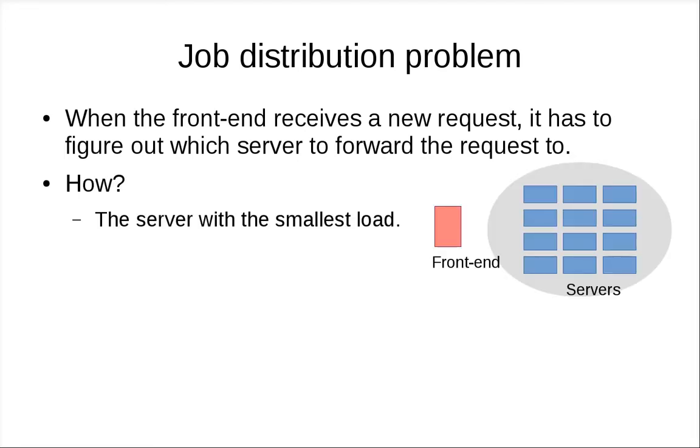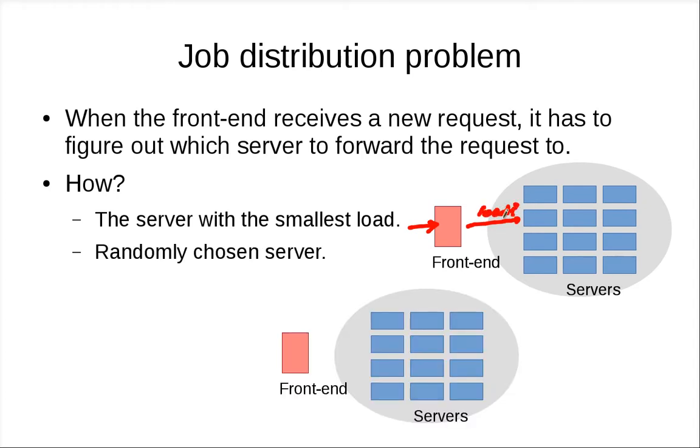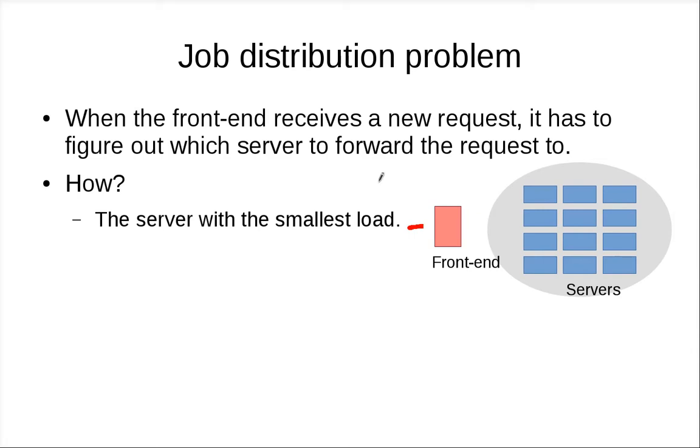There are many ways to do that. One is that the front end figures out the server with the smallest load. In order to do that, when some job comes in, the front end has to somehow know the status of all the servers. Maybe it has to ask the server, what is your load? And then use that information to forward the job to the smallest guy. If this guy says, yeah, I have the smallest load, the front end then forwards the job to it. And if you have a lot of servers, maintaining this minimum loaded guy will be another problem that you have to solve.